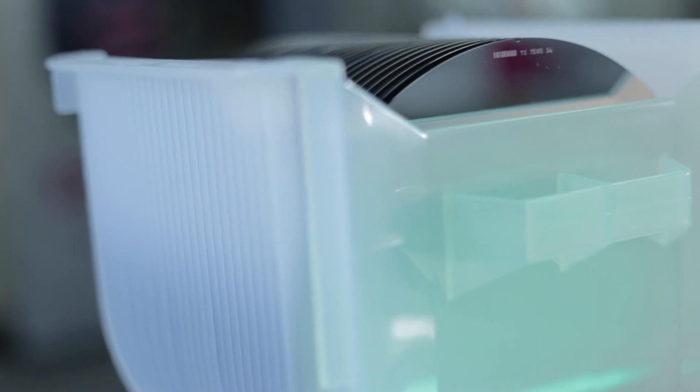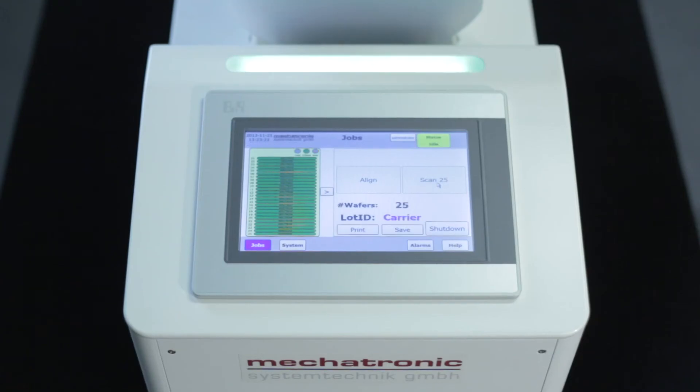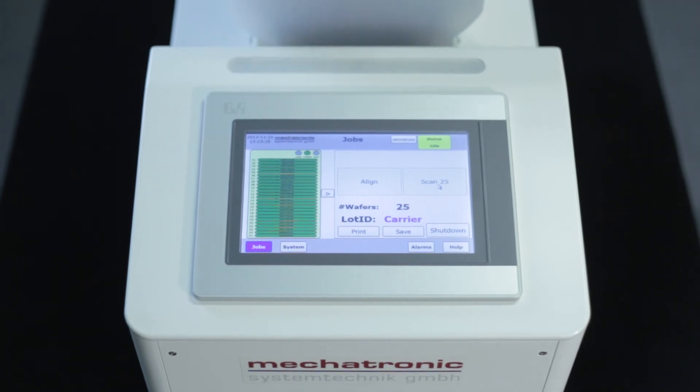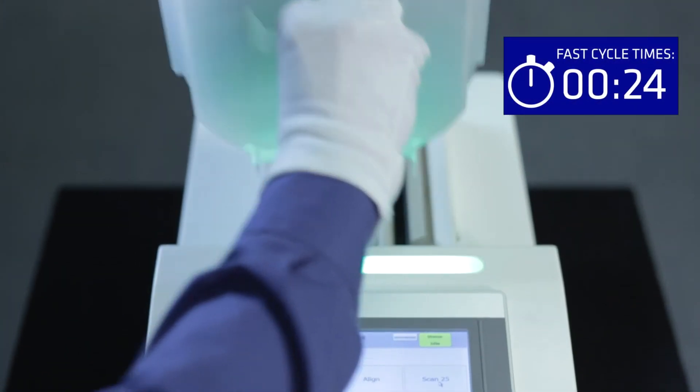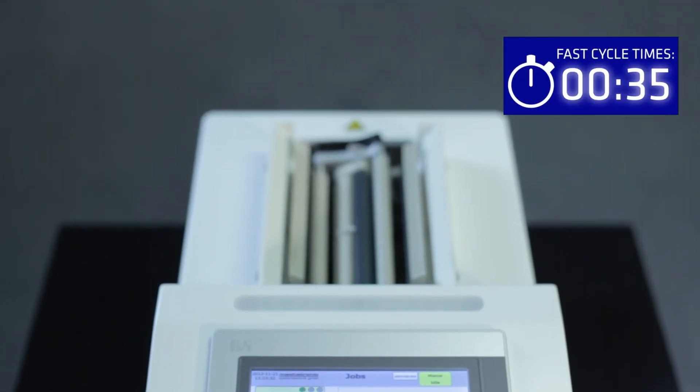Alignment and ID reading of various wafer types can be realized directly on the batch wafer reader without any additional tools. Reading at fast cycle times with 35 seconds per slot of 25 wafers makes the difference.